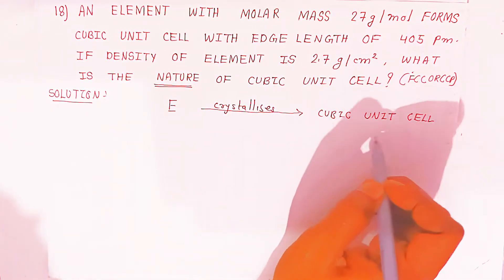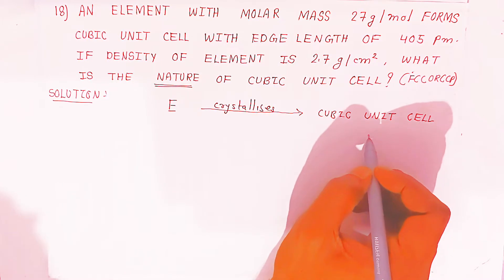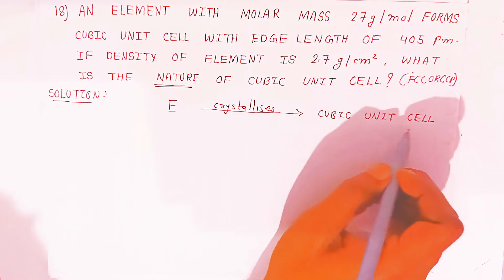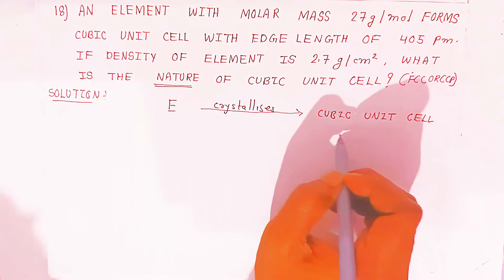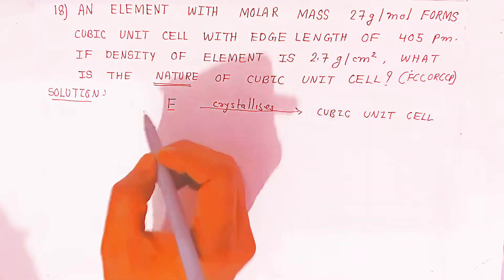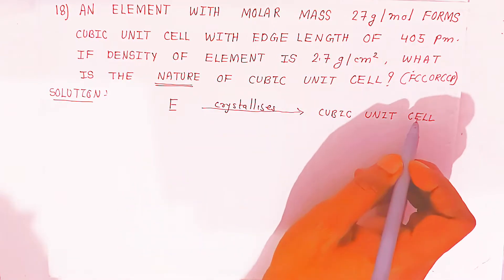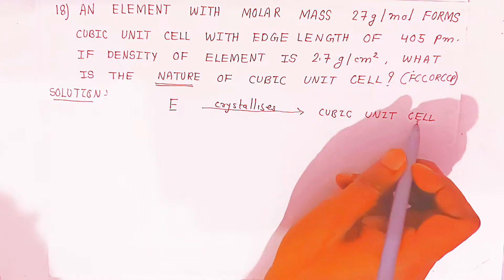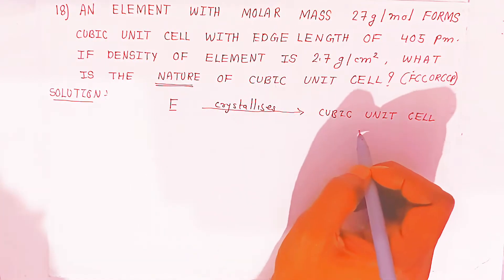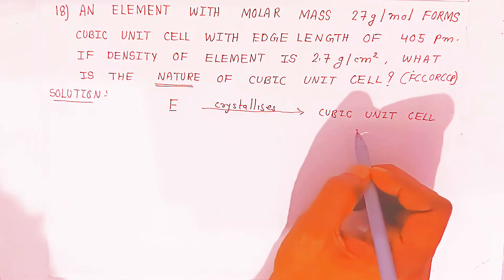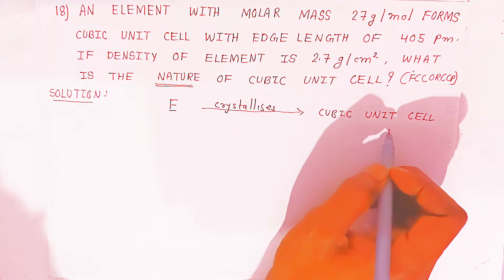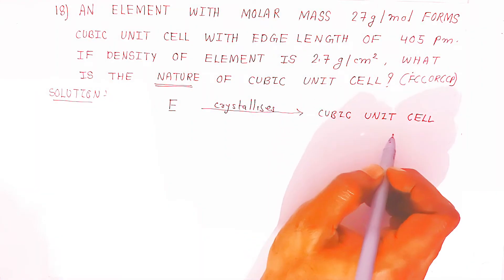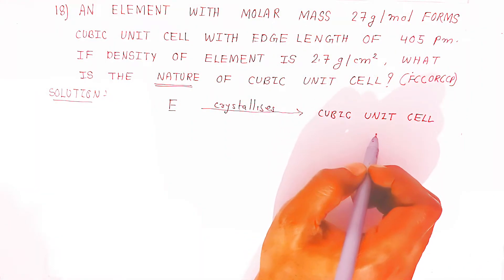The cubic unit cell could be a simple cubic unit cell, a body centered cubic unit cell, or a face centered cubic unit cell. If the cubic unit cell is made up of one element (Z=1), it is simple cubic. If it is made up of two elements (Z=2), it is body centered cubic. If it is made up of four elements (Z=4), it is face centered cubic, also called cubic close packed structure.